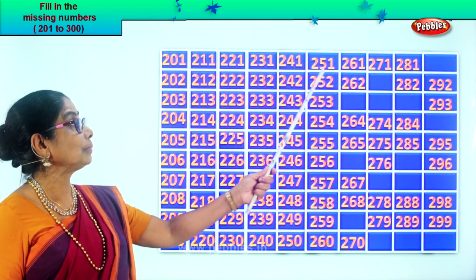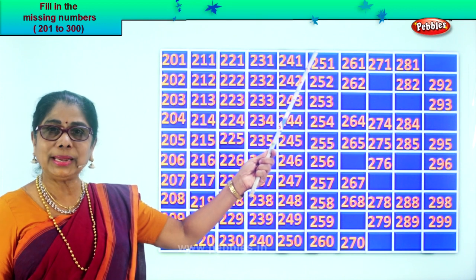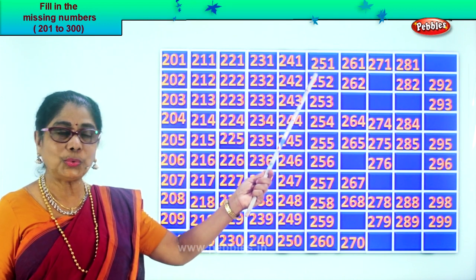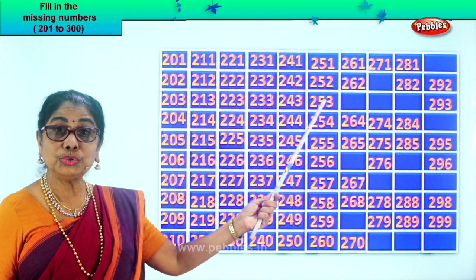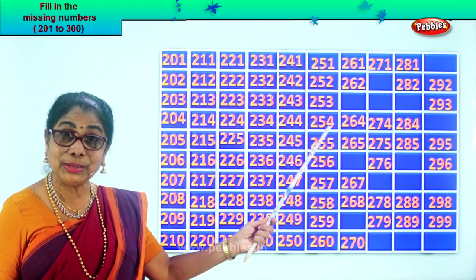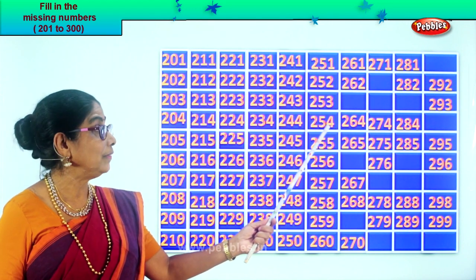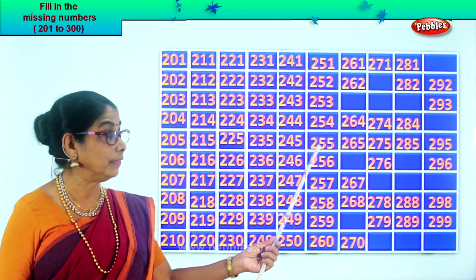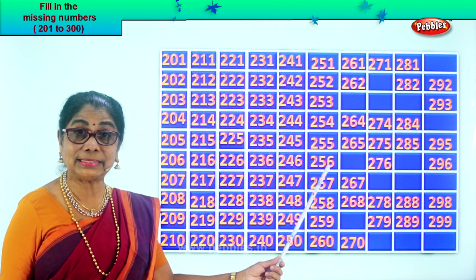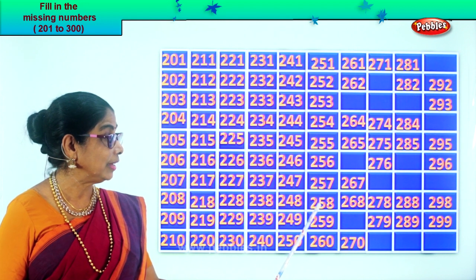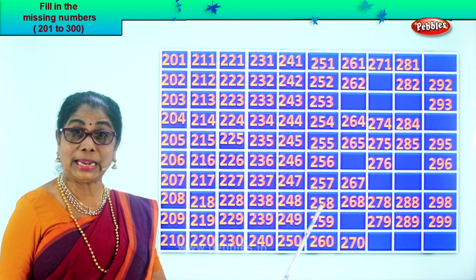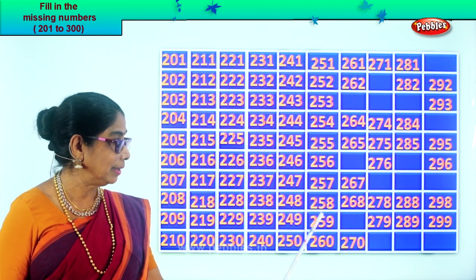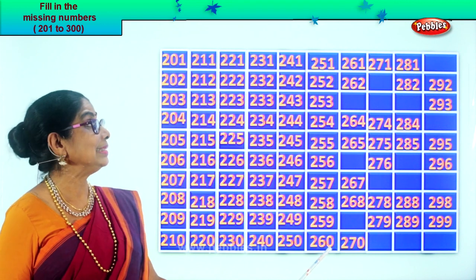Very good. Read: two hundred and fifty-one, two hundred and fifty-two, two hundred and fifty-three, two hundred and fifty-four, two hundred and fifty-five, two hundred and fifty-six, two hundred and fifty-seven, two hundred and fifty-eight, two hundred and fifty-nine, two hundred and sixty.